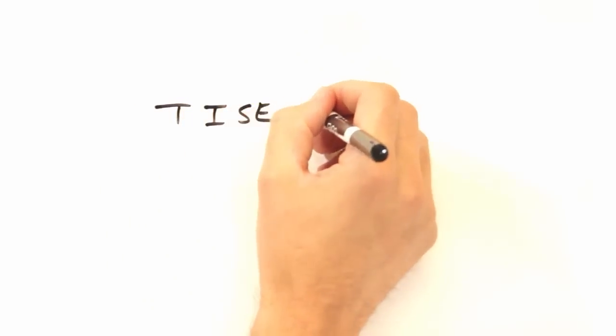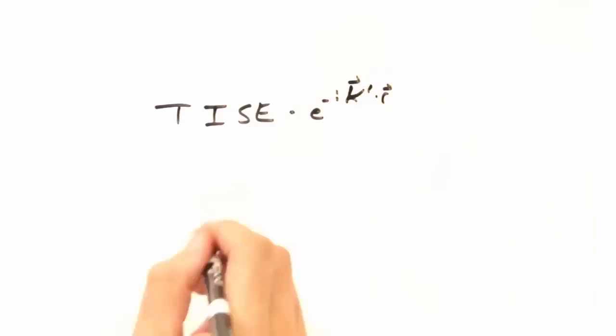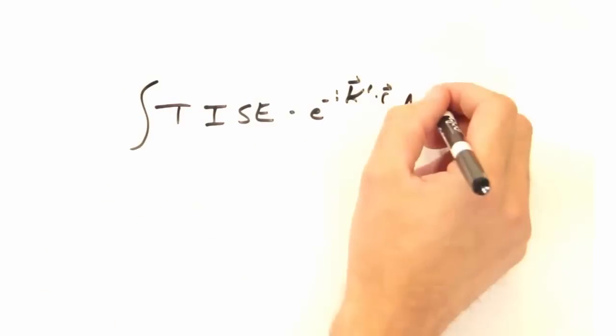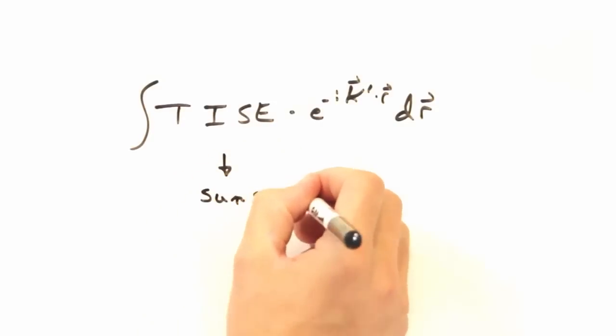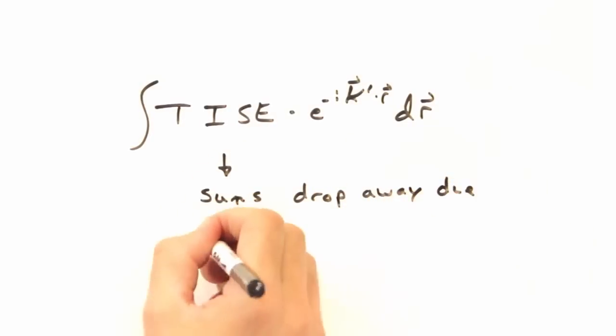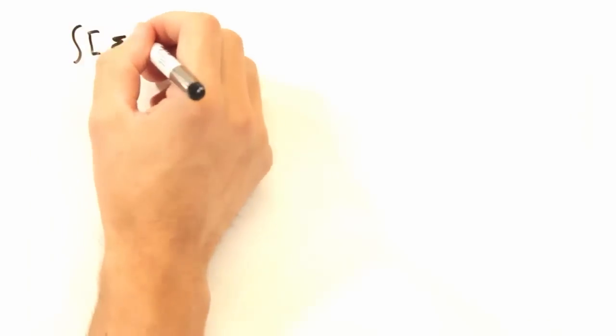We'll start this trick by multiplying our time-independent Schrodinger equation by e to the i k prime x. Then we'll integrate across dr. So similar to the 1d integral, only the terms where k equals k prime give a non-zero solution.